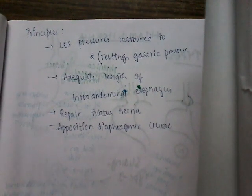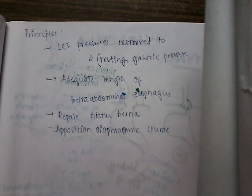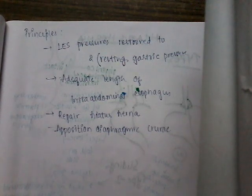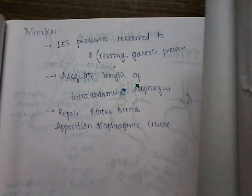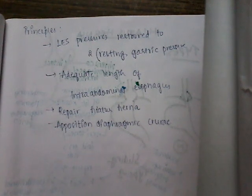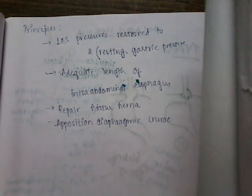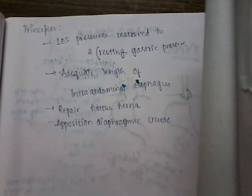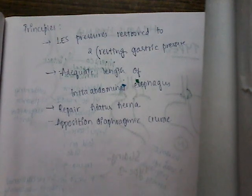We have now learned nearly 13 different surgeries. The main principles involved in all these surgeries are: number one, the lower esophageal sphincter pressure is restored to two times the resting gastric pressure, preventing reflux of contents from the stomach into the esophagus; number two, adequate length of intra-abdominal esophagus should be maintained; number three, whenever there is a hiatus hernia it should be repaired; number four, opposition of diaphragmatic crura should always be done.